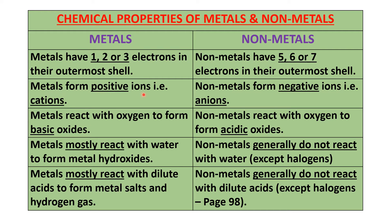Metals form positive ions. Why positive ions? Because they usually give away electrons. Whenever an element gives away electrons, it becomes positive, because electrons are negatively charged particles. So when you give away negative things, you become positive. Like giving away bad habits makes you a better person. So metals form positive ions — they have a tendency to give away electrons. Whenever a metal gives away electrons, it forms an ion.